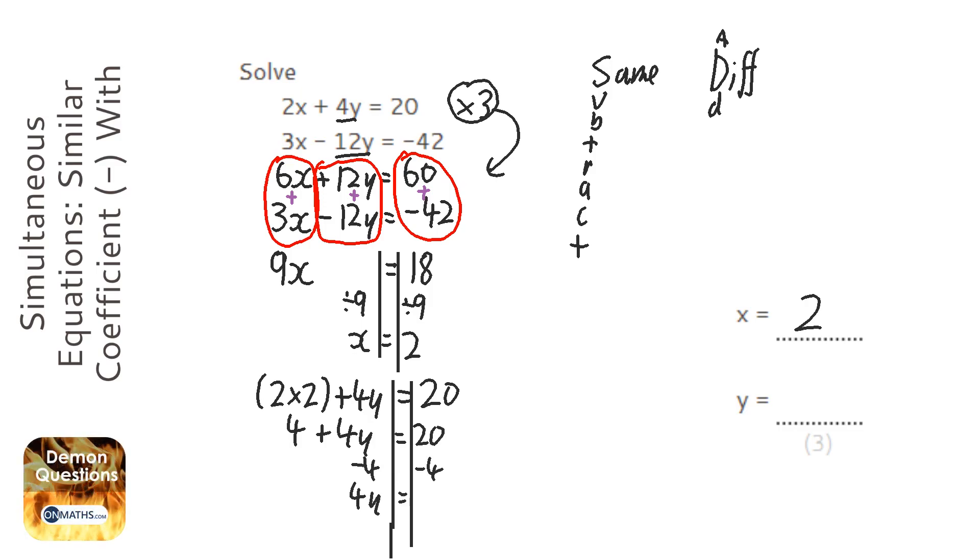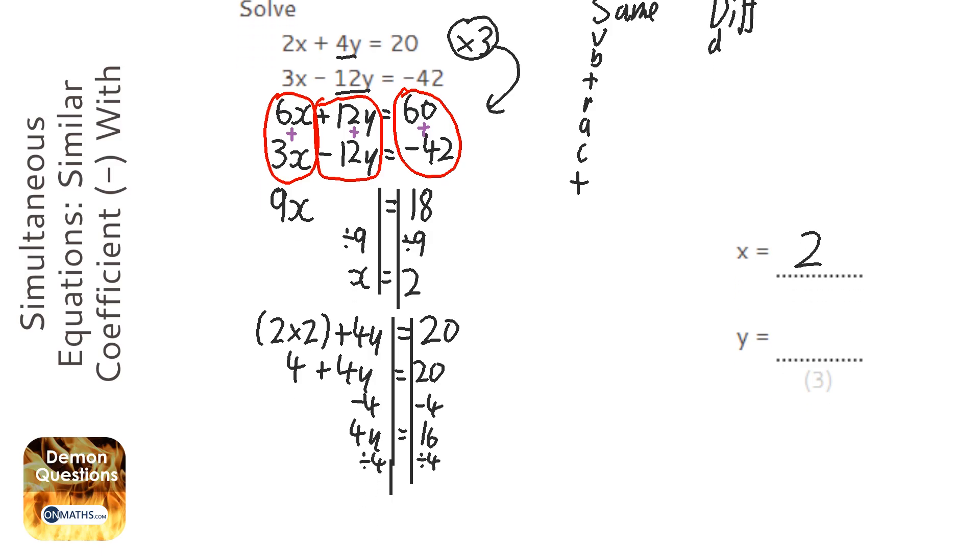4y equals 16. Divide 4 both sides. Let's move down a bit. Y equals 4.